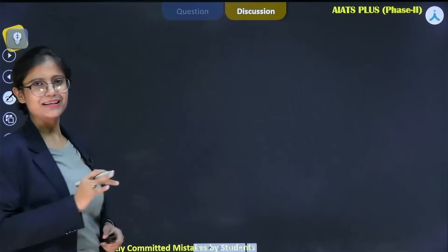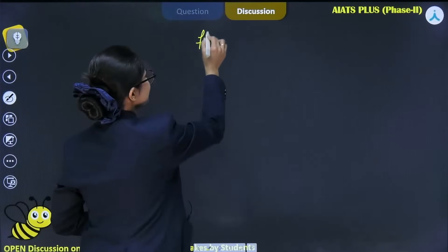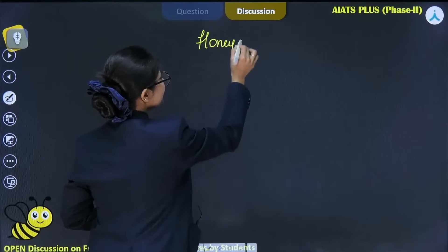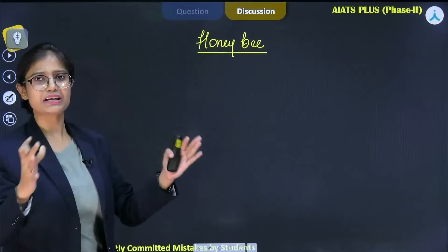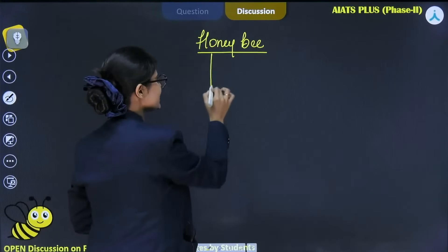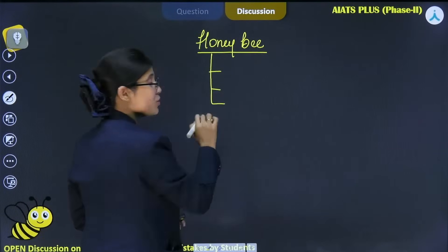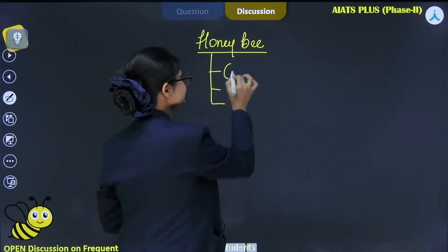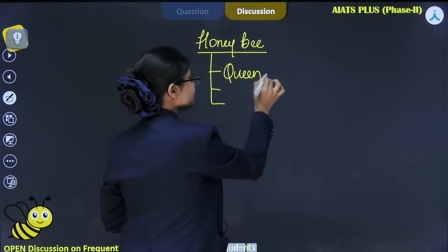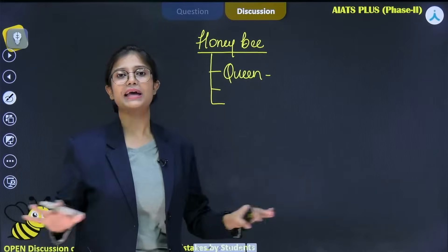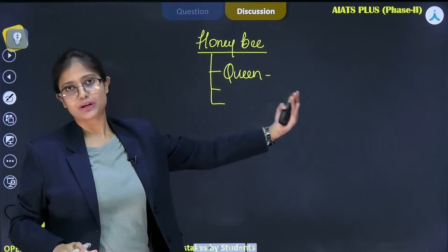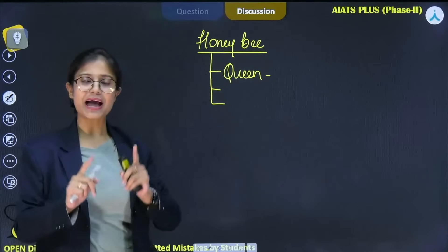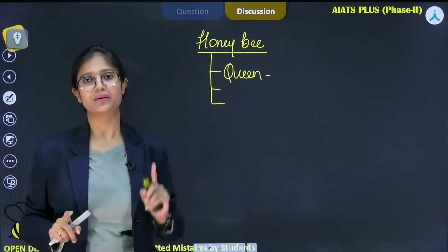If we talk about honeybee, how many types of honeybee are present? They could be of three types. First one is queen. The work of queen is only to reproduce and lay eggs. She is the only one who can reproduce in the beehive. One beehive will have only one queen. Remember that.